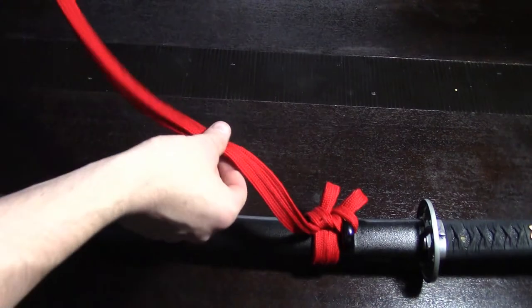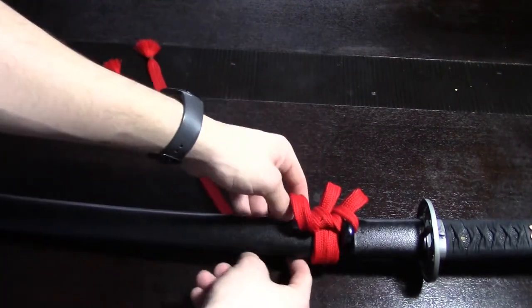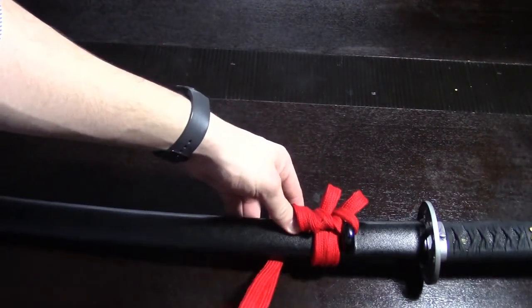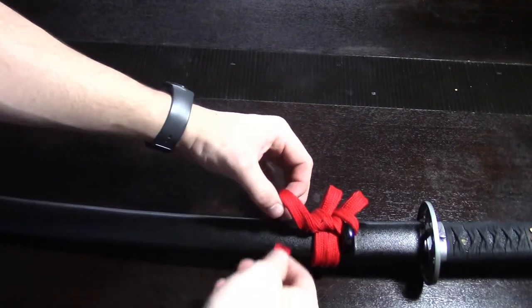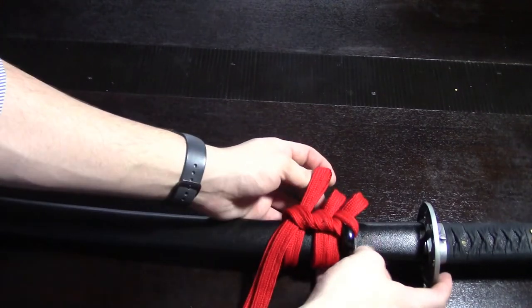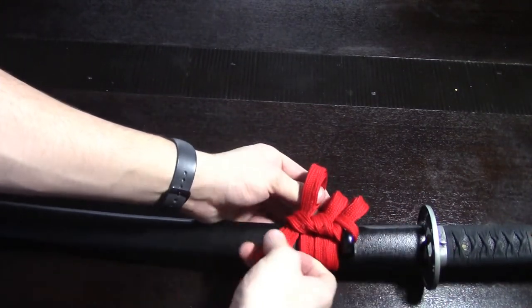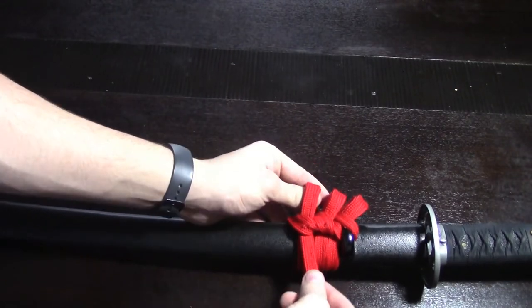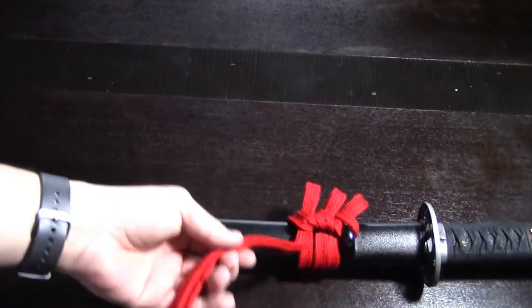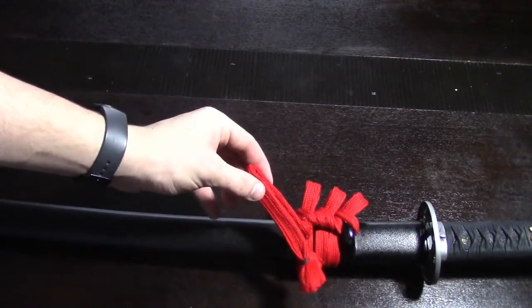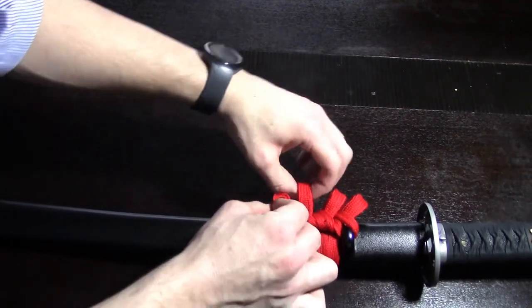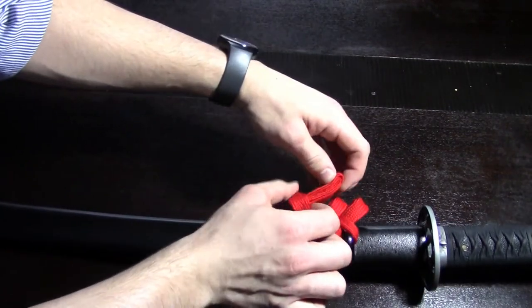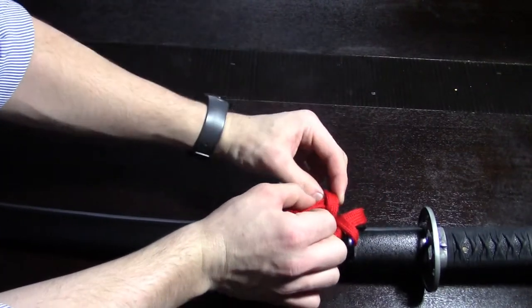Two loops. There's your three loops. Now from here, you just fold that part and through these loops we go.